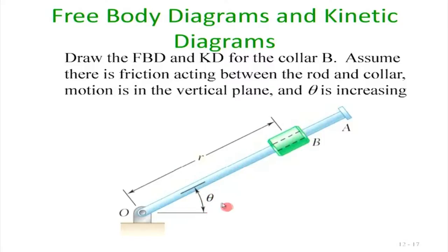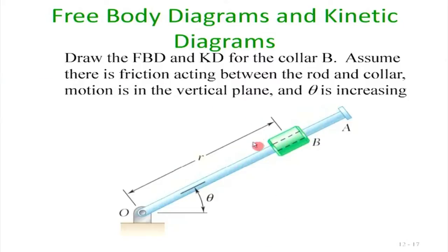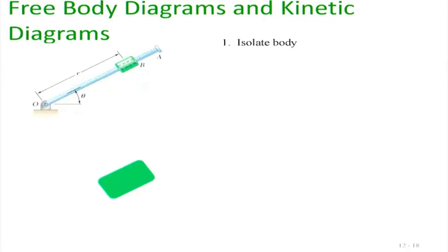Additionally, there is a sleeve that can freely move along the rod. The problem states there is friction between the rod and the collar, and motion is in the vertical plane — meaning gravity acts on particle B. We need to draw the free body diagram and kinetic diagram for the sleeve.